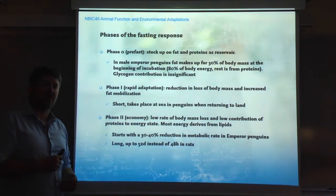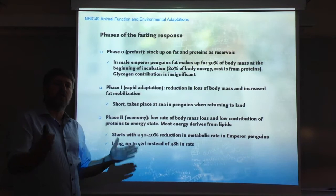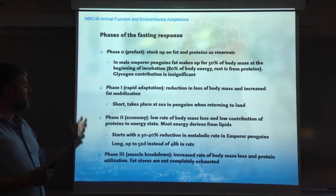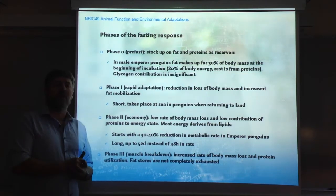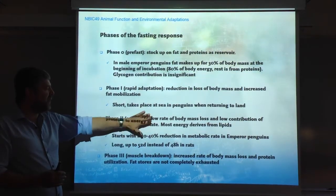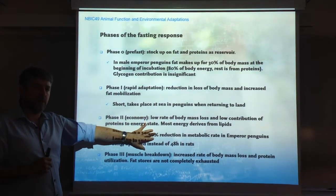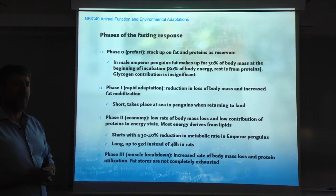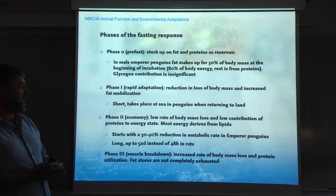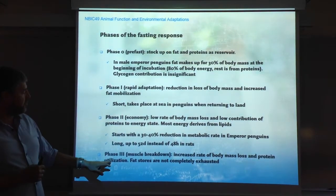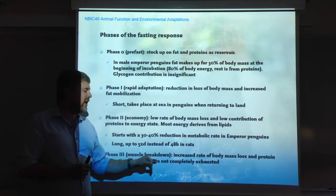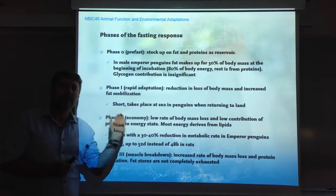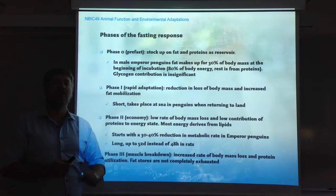That's where Krogh's dictum applies — here we have a much larger time window to look at what is going on. Phase 2 is followed by phase 3, characterized by muscle breakdown. By the time fat is running low, other things have to be burned — in this case it's protein, the muscle — and we are reaching the level to which the animal will be able to withstand fasting. There is an increased rate of body mass loss and protein utilization, although fat stores are not completely exhausted. These are the four phases I'm going to illustrate with studies in penguins, showing the different metabolic changes that can be observed.